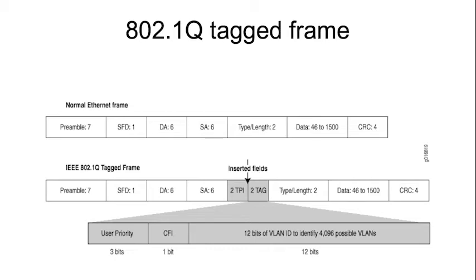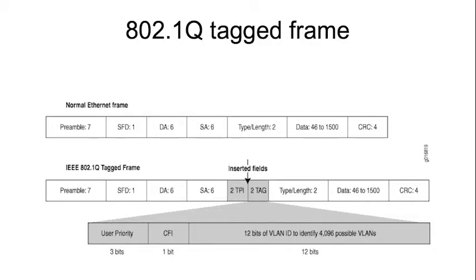In the tagged frame, after the addresses, instead of the type/length field, you have a two-byte tag protocol identifier — a number to tell you which tagging protocol you're using — and then a two-byte tag. That two-byte tag has internal structure: three bits for user priority (some use this for QoS, but it's advised to ignore them), one historical bit that used to indicate token ring, and — most importantly — 12 bits at the end where the actual VLAN tag is stored. Since there are 12 bits, you can have 2¹² = 4096 different tags, so a switch will not allow you to create a VLAN ID above 4095.